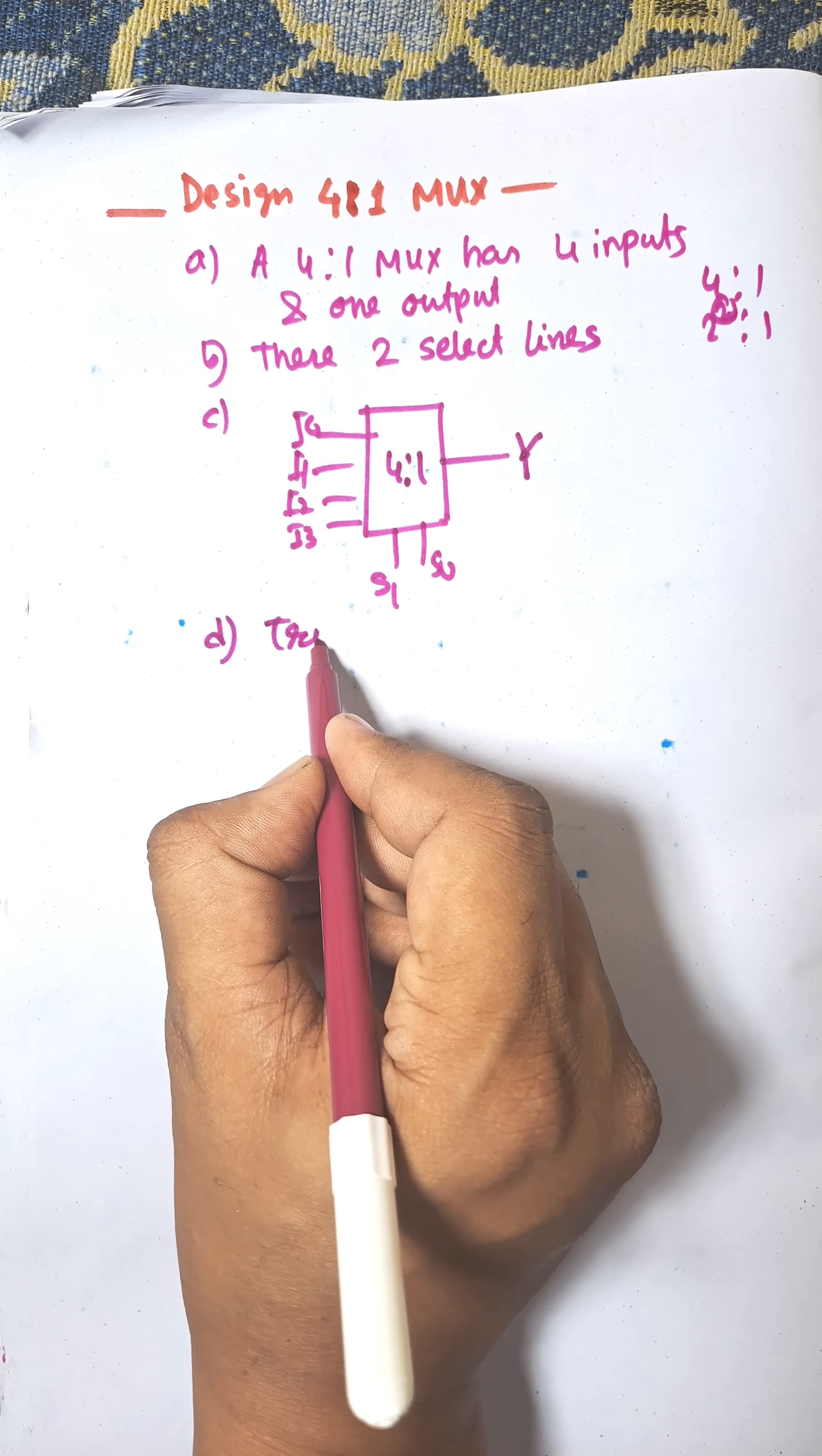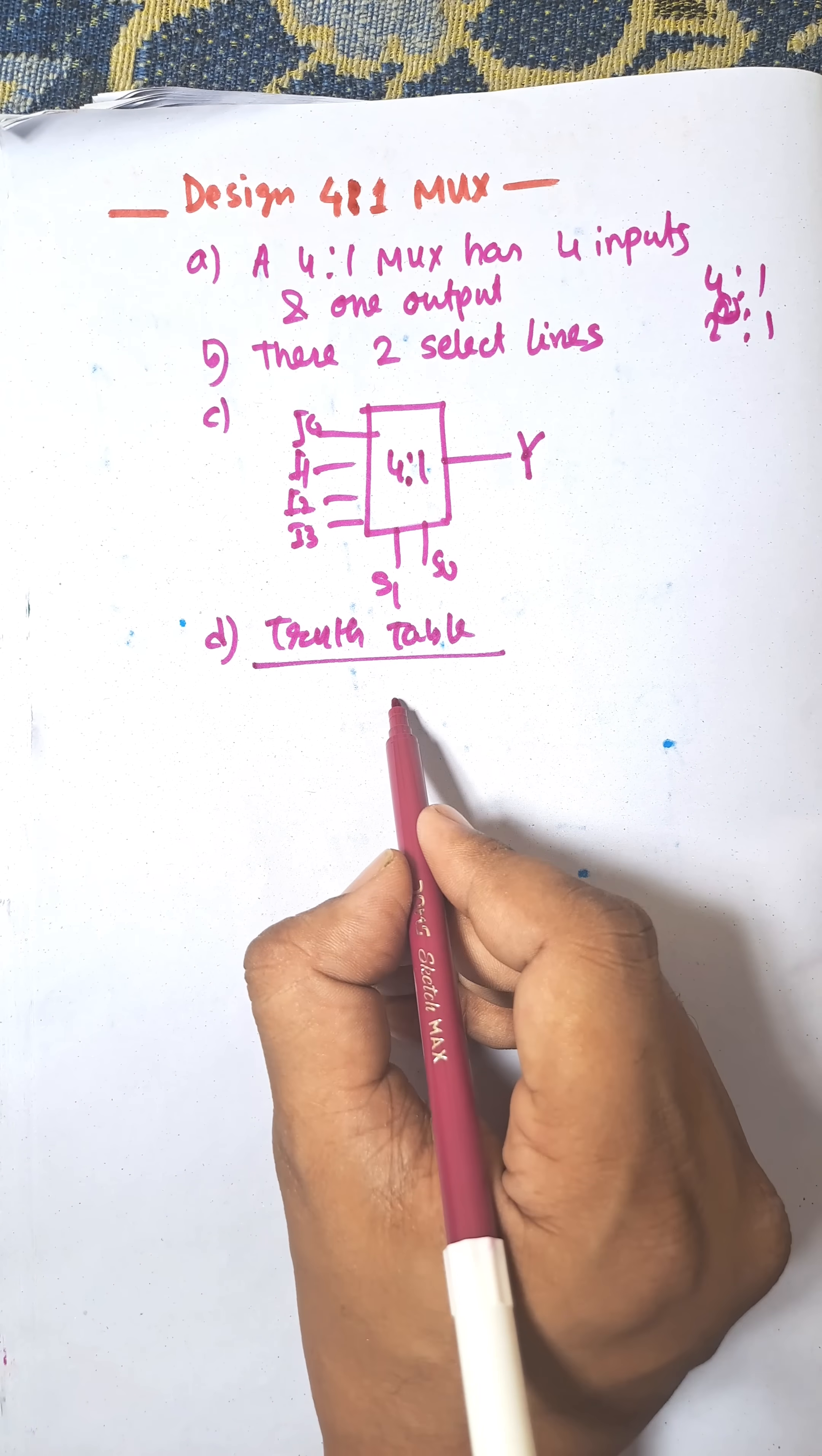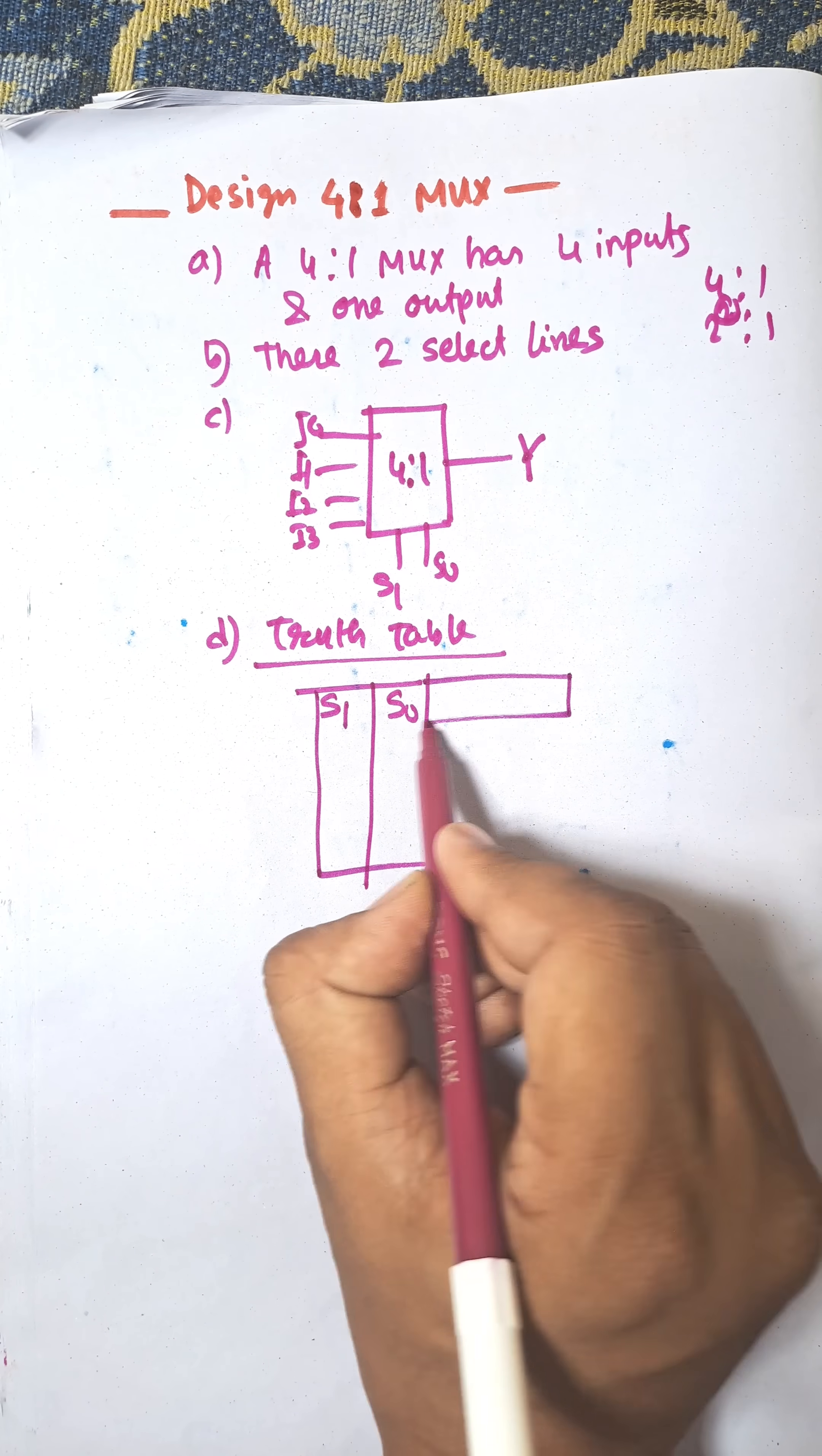Next one is the truth table. The truth table is based on select lines S0, S1, and this is the output Y.